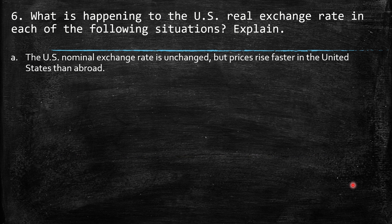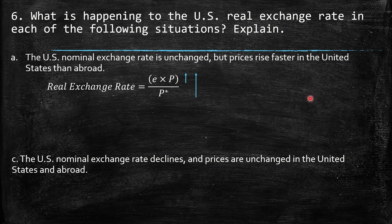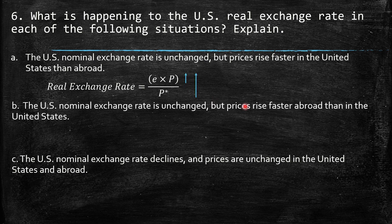Question 6 asks: what is happening to the US real exchange rate in each of the following situations? Part A: the US nominal exchange rate is unchanged but prices rise faster in the United States than abroad. Remember the real exchange rate equation — nominal exchange rate times domestic prices divided by external prices. We have an increase in P in the numerator, so we have an increase in the real exchange rate.